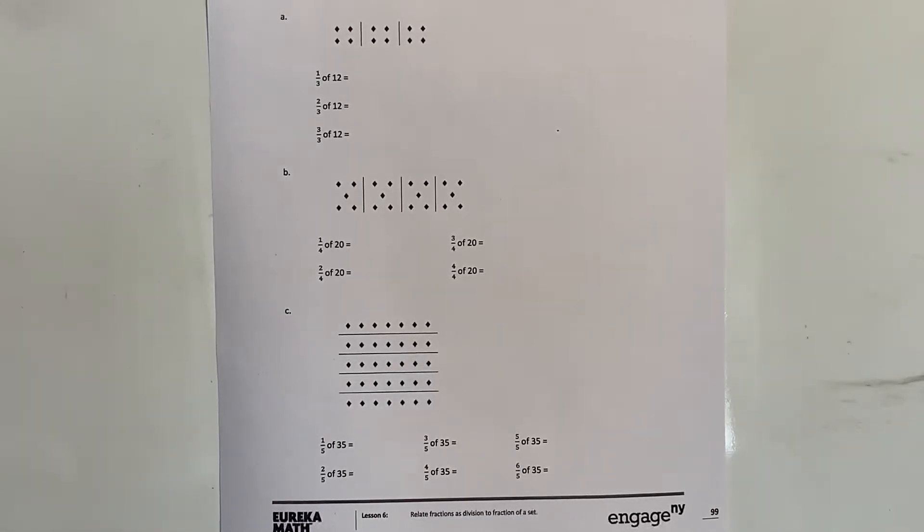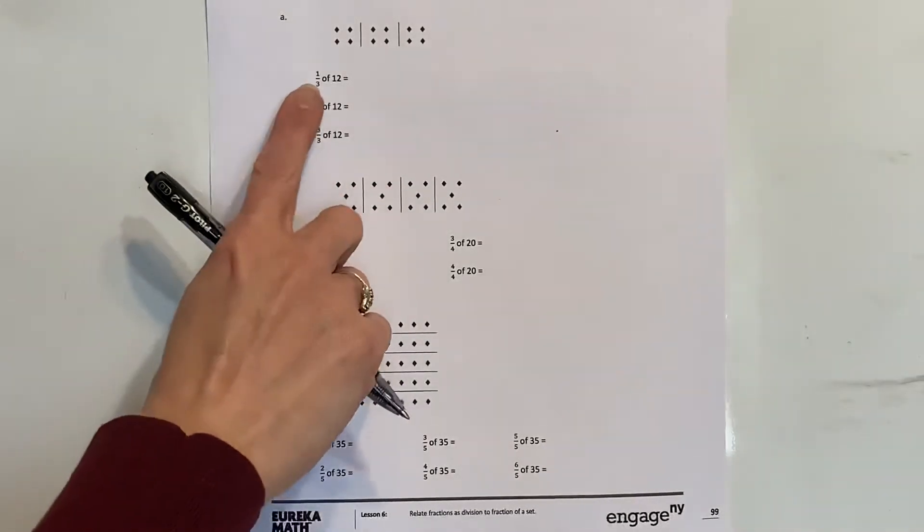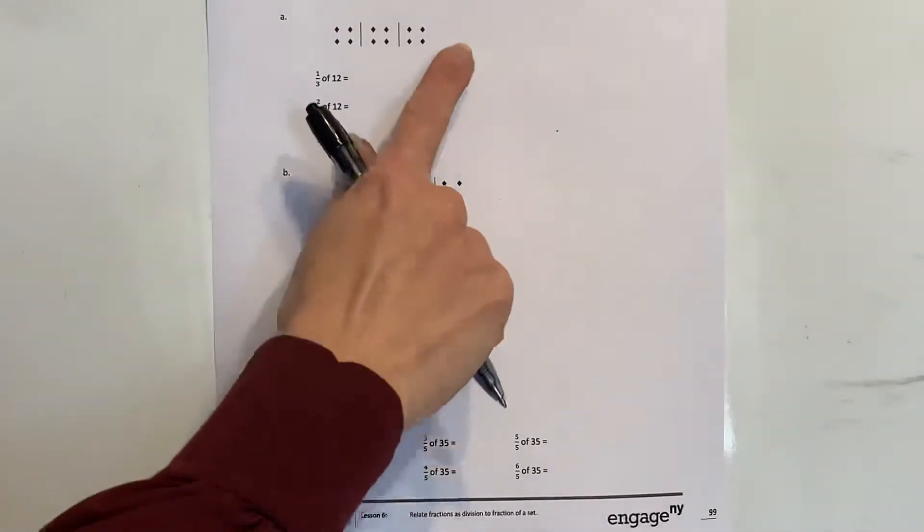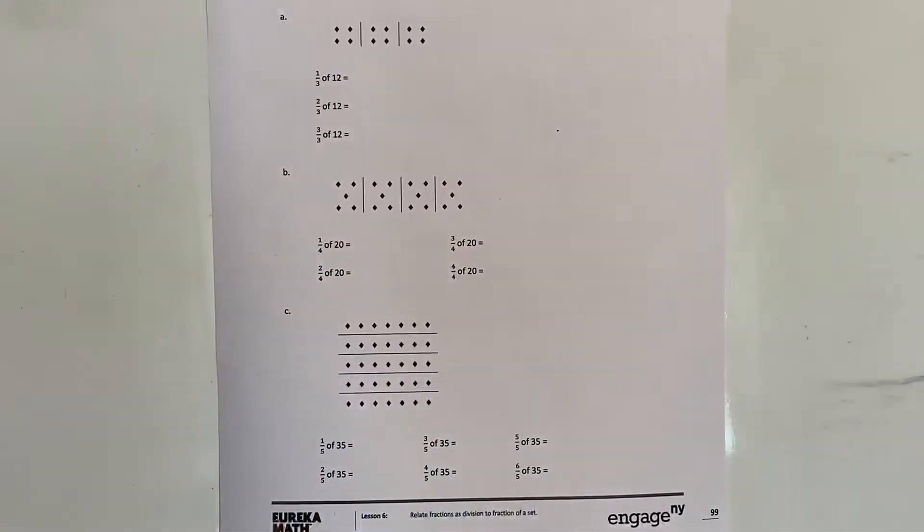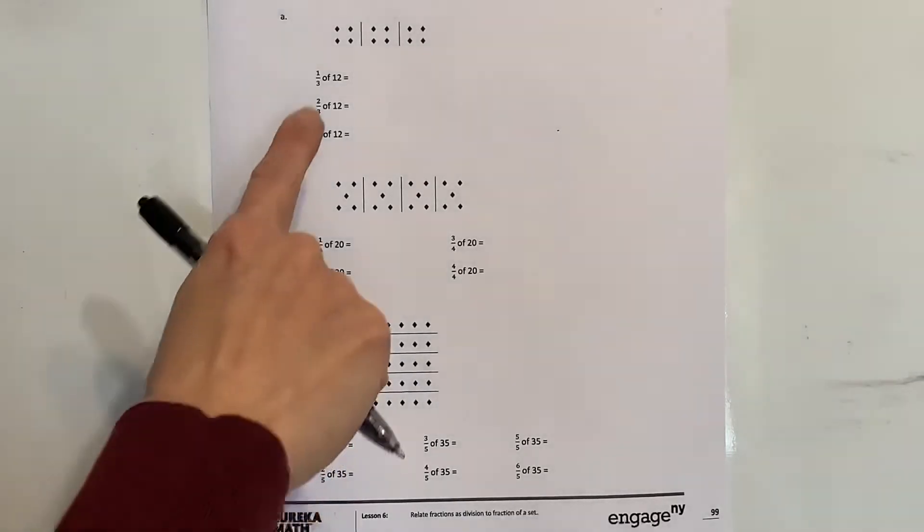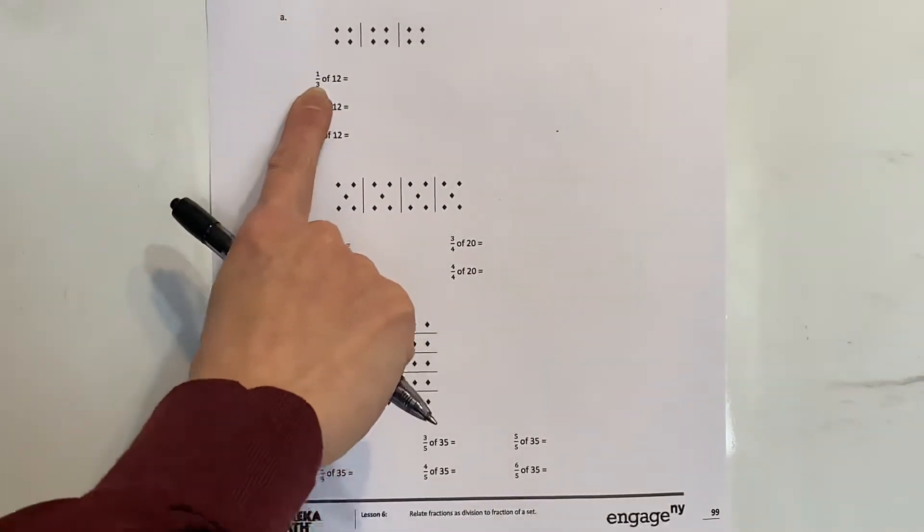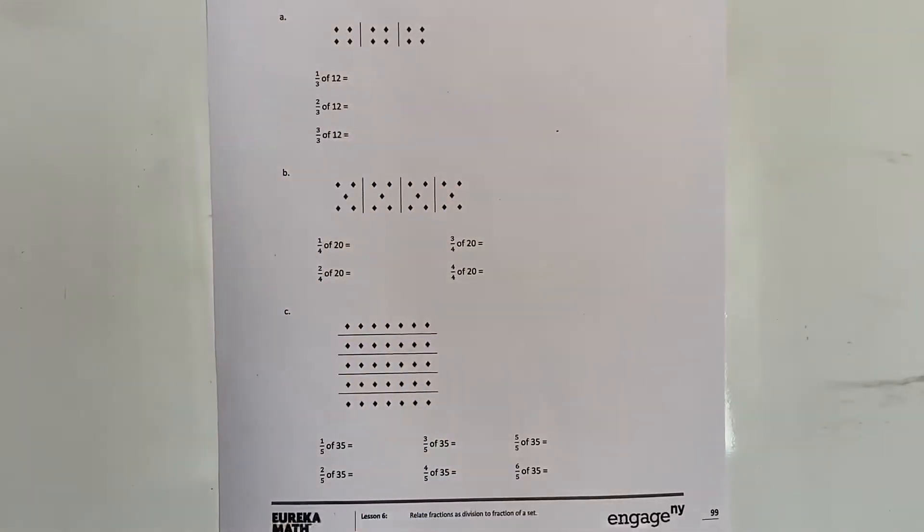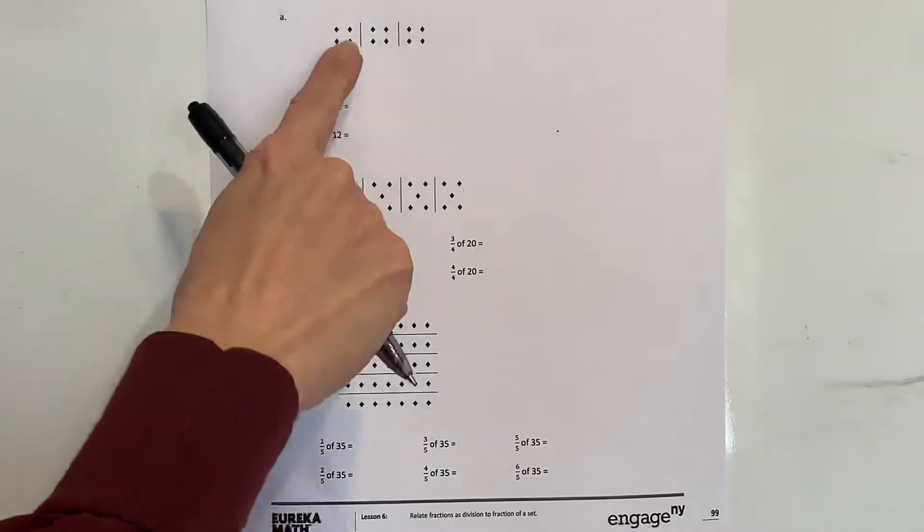Again, you could have used counters to do this. Remember the denominator is very important - that tells me how many groups. It says find the value of each of the following. So one-third of twelve - I know there's a total of twelve counters here, and they're going to be put in three equal groups.